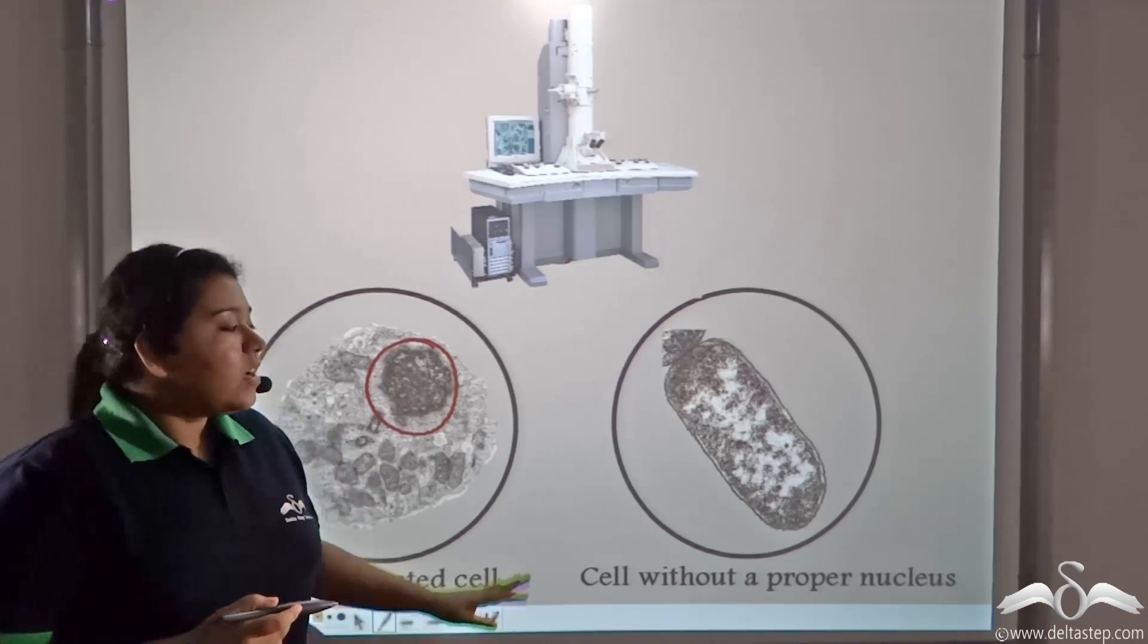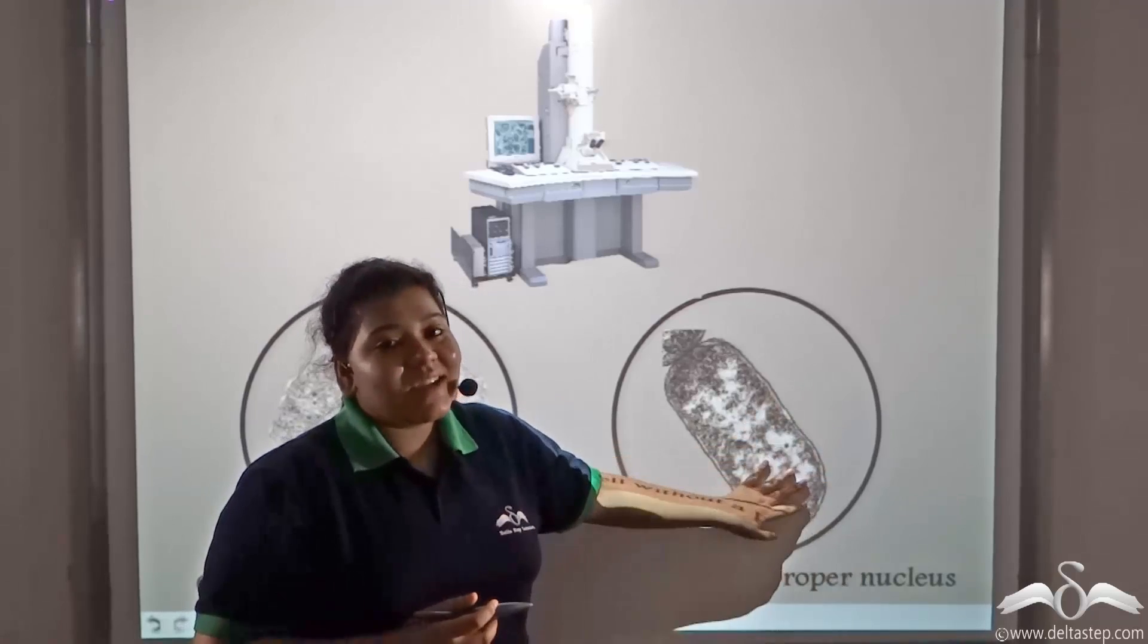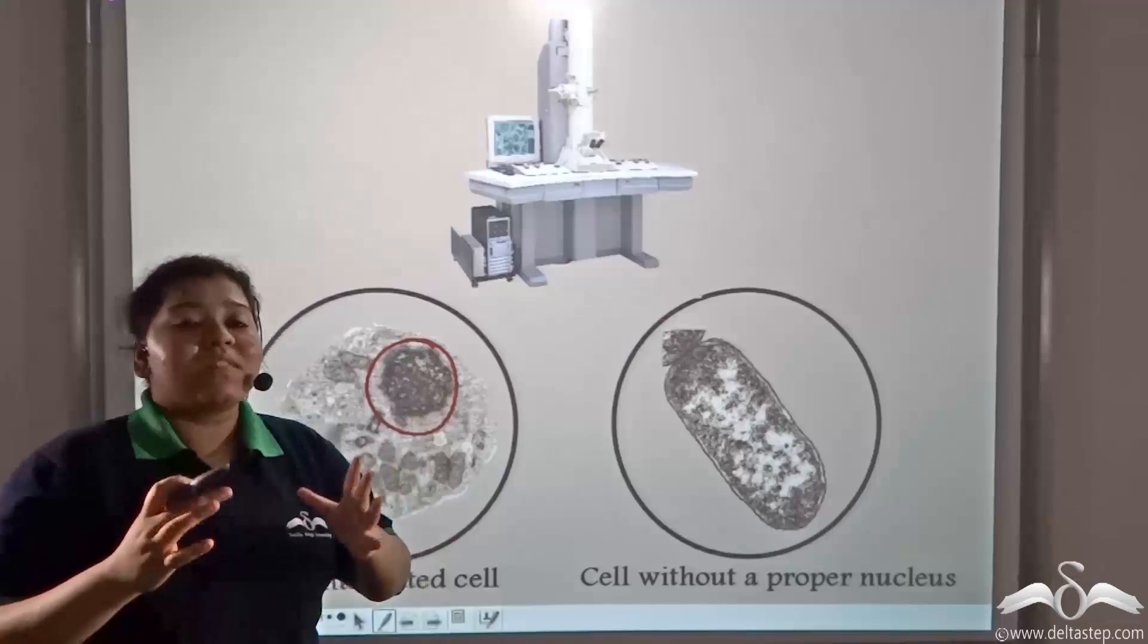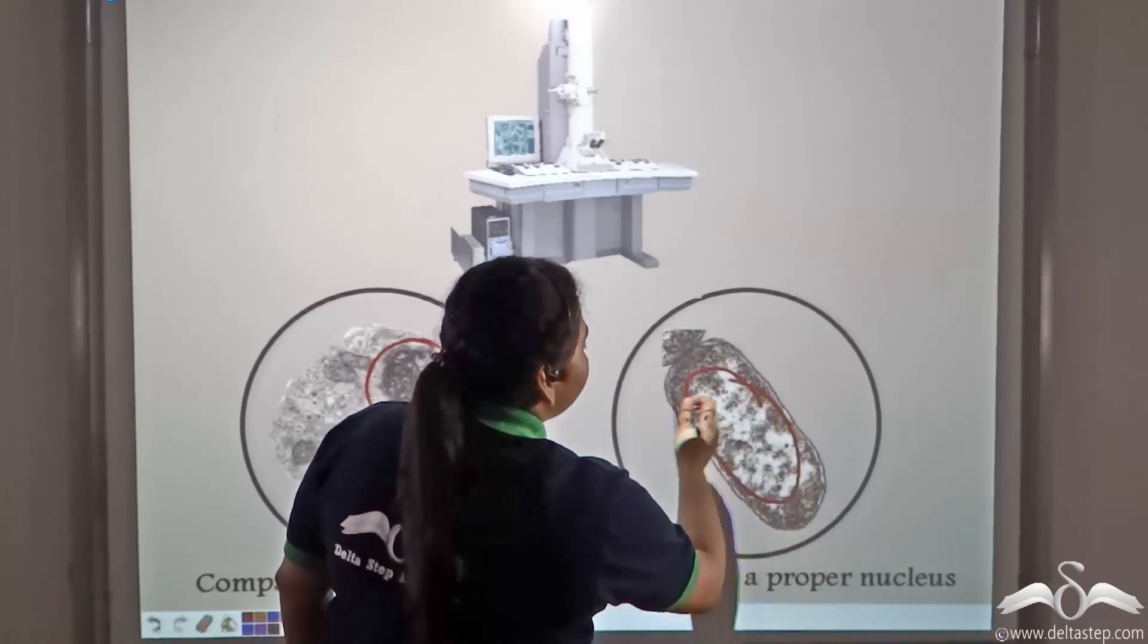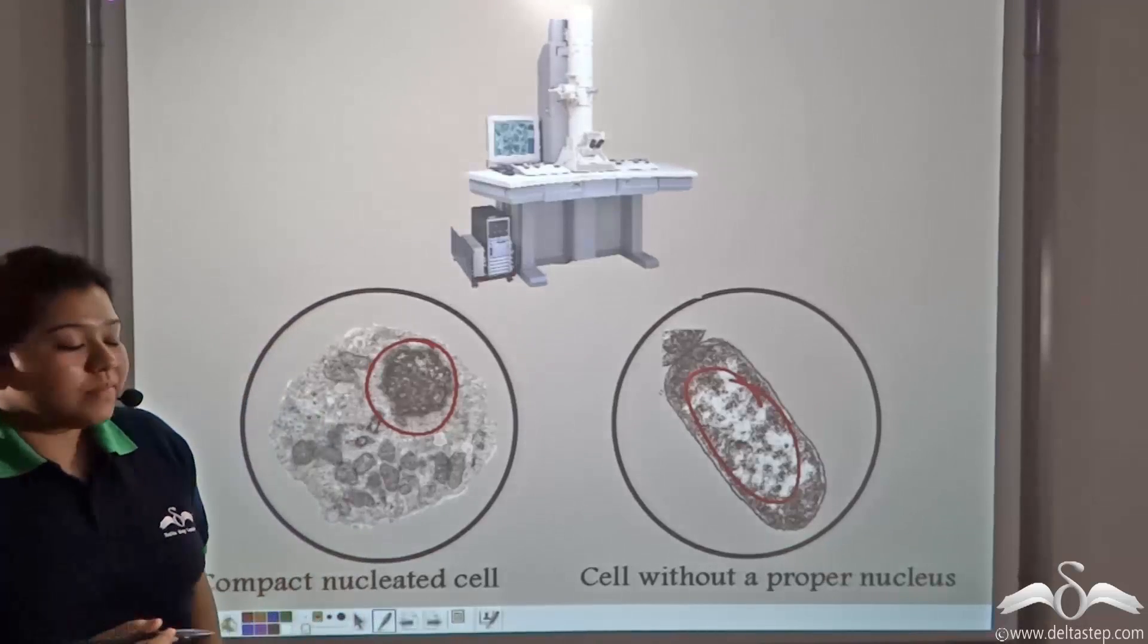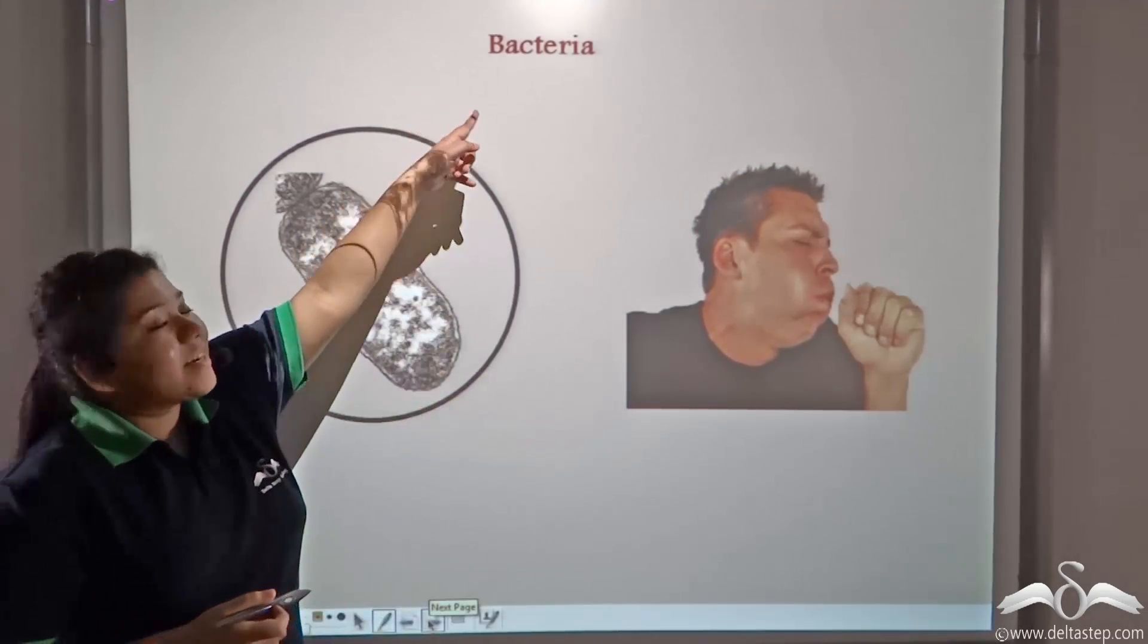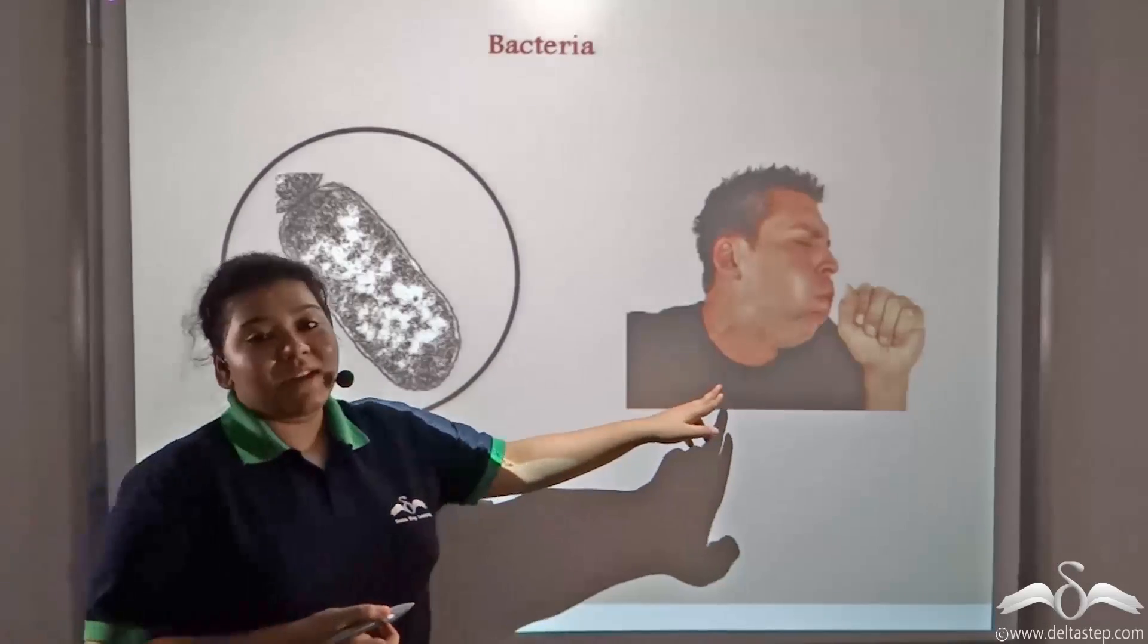But soon, another unicellular microorganism was discovered which did not have a compact nucleus. Its nuclear materials were scattered throughout the cell. This microorganism is known as bacteria and it causes a lot of diseases in man.